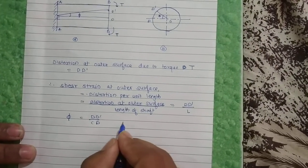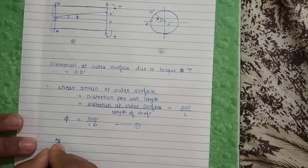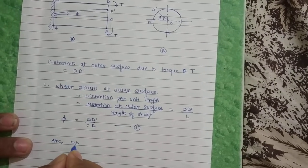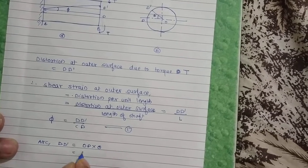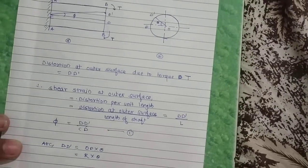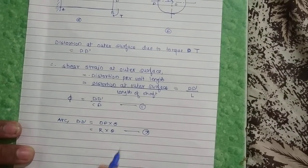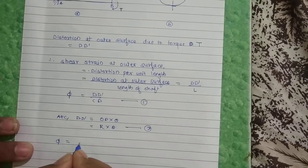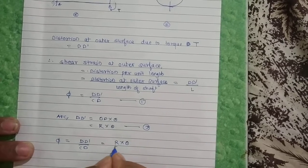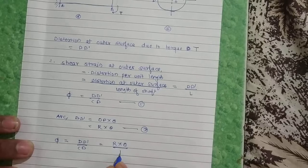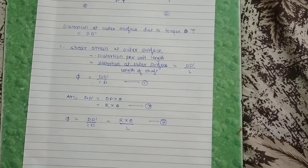This is equation 1. Now, see figure B: arc DD' is equal to OD into theta, where OD is the radius R. Substituting this value into equation 1, phi equals R·theta divided by CD. Since CD is the length L, this gives phi = R·theta / L. This is equation 3.